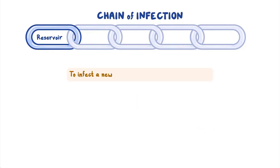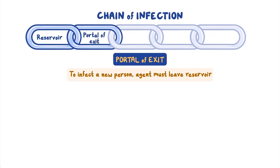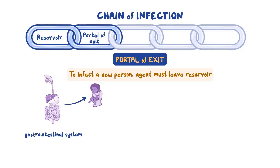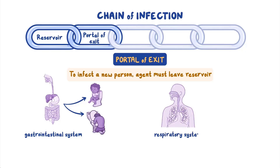To infect a new host or person, the infectious agent must first leave its reservoir, which may be another infected person, through what we call a portal of exit. For example, if the infection is in the gastrointestinal system, then the agent might exit through the anus via poop or mouth through vomit. If it is a respiratory infection, then it might exit through the mouth or nose in droplets from a cough or sneeze.